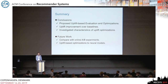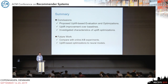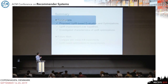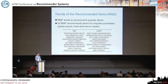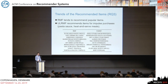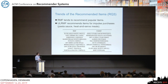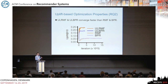Thanks for the talk. During your uplift optimization plan, did you put in guardrails so that you don't recommend very random items? Those might have higher uplift, but lower precision. For example, under UL-RMF you might have slightly more seemingly random items recommended, which could affect customer experience. The speaker responded: I haven't done that experiment, so I can't say anything conclusive. But looking at the learning curves, I think there is something worth investigating regarding whether the recommendations differ meaningfully.